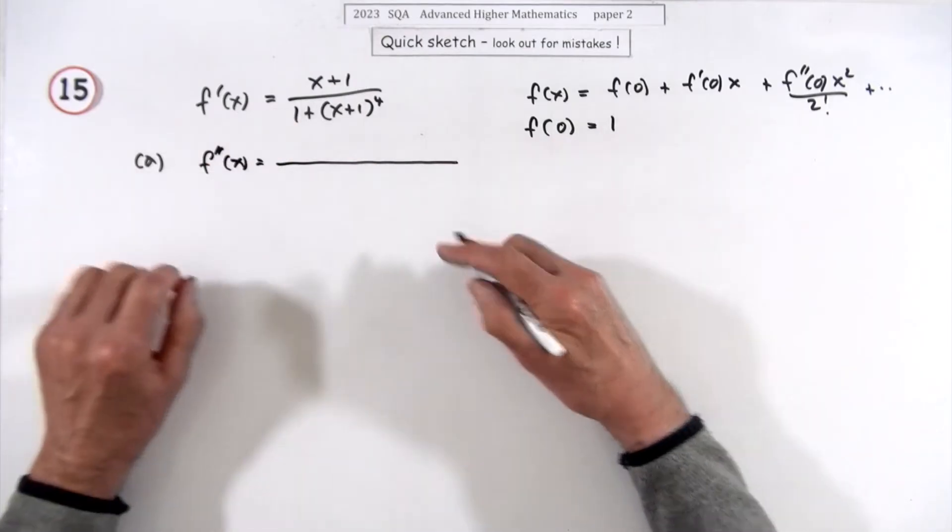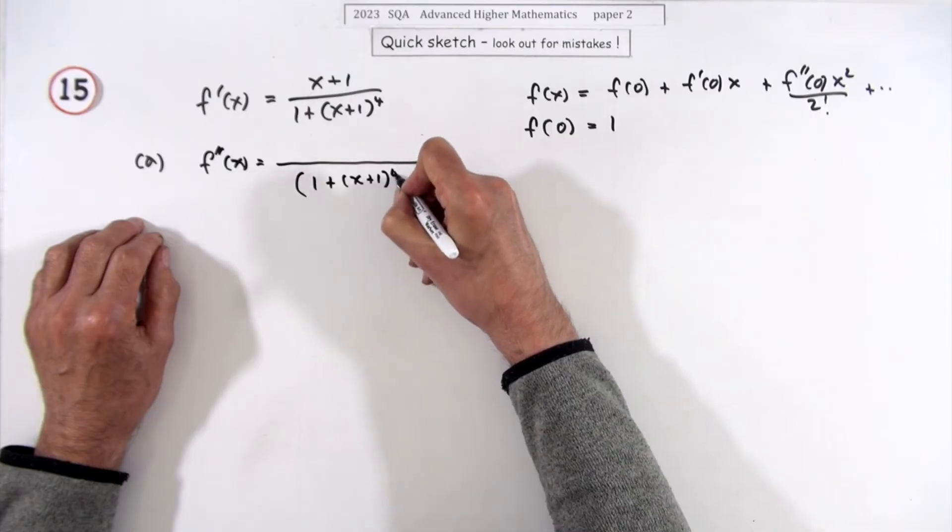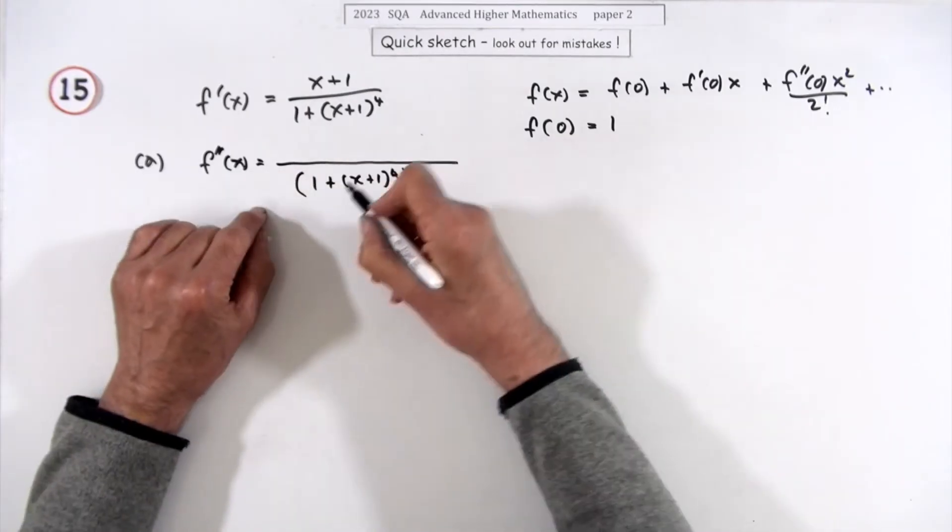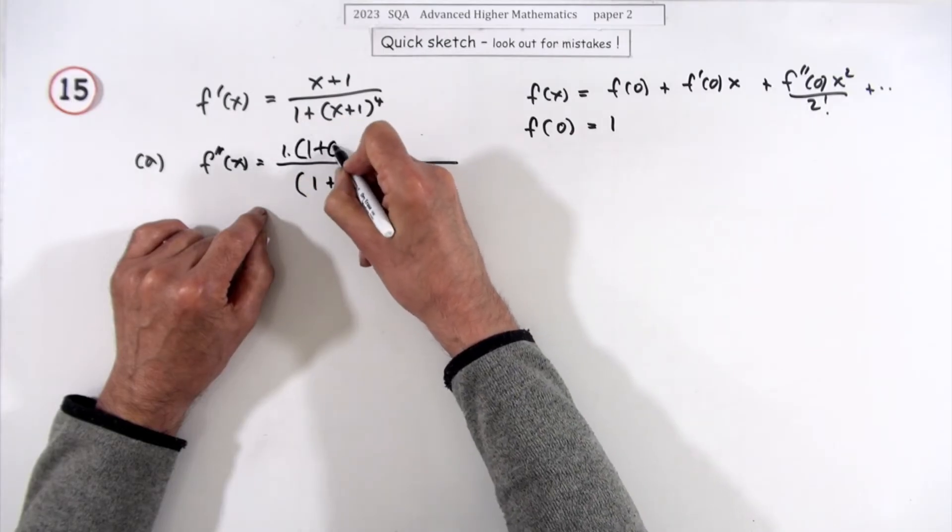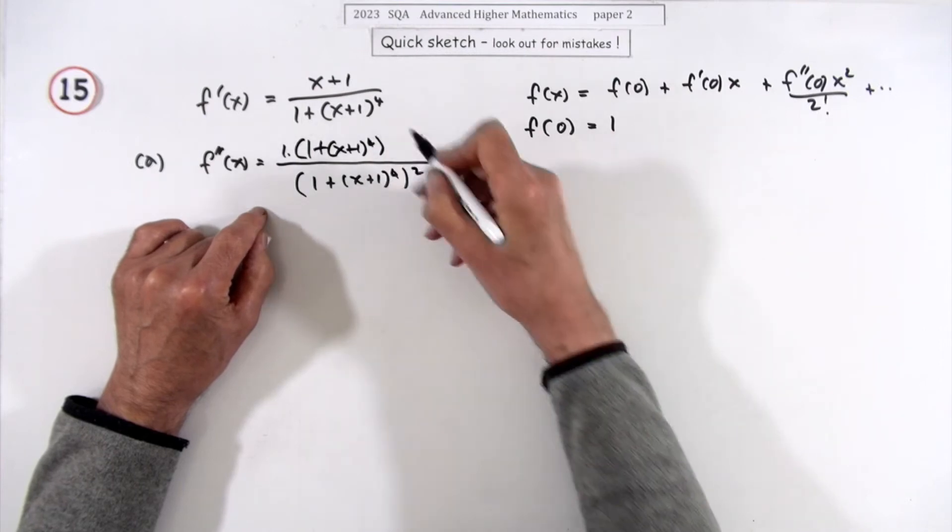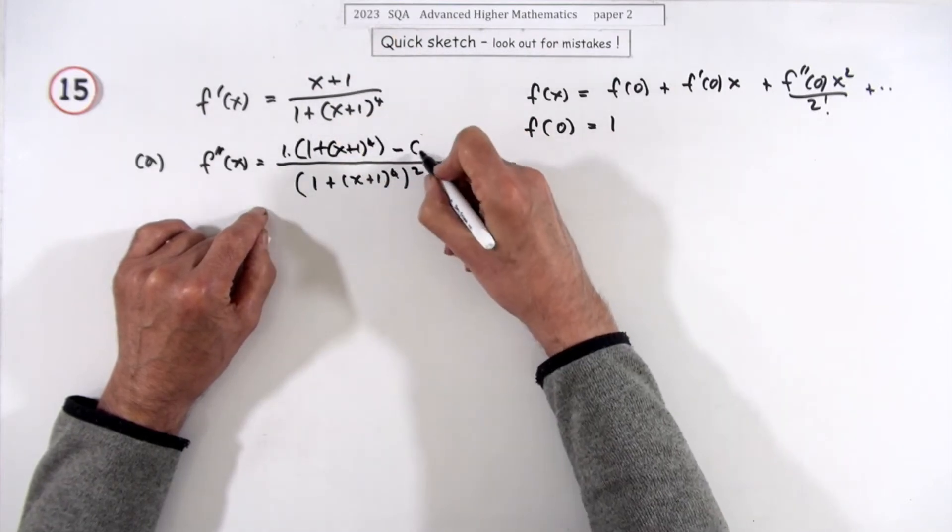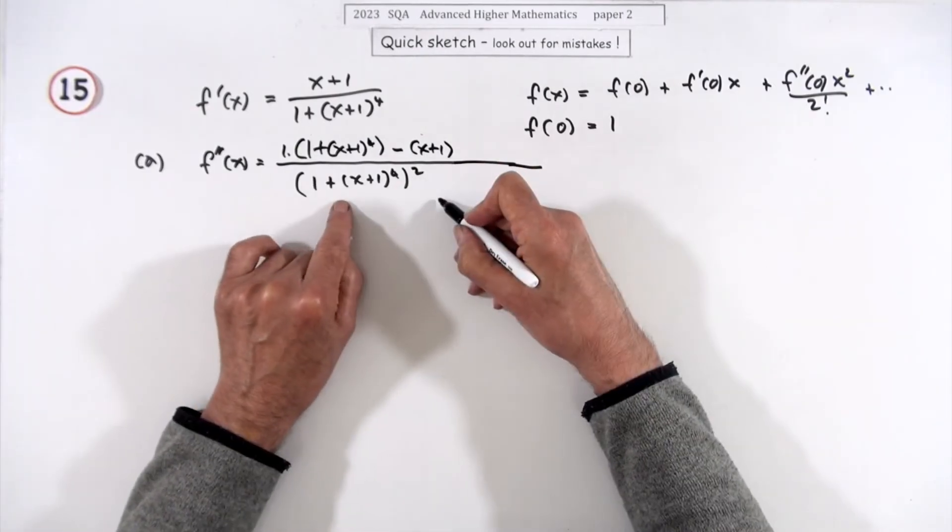So it's a quotient: (1+x+1)⁴ all squared, it's going to look nasty. Differentiate the top, at least that's just a one. (1+x+1)⁴ minus leave the top alone, x+1.